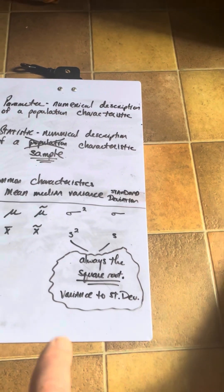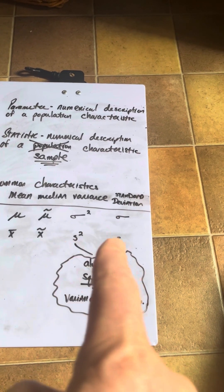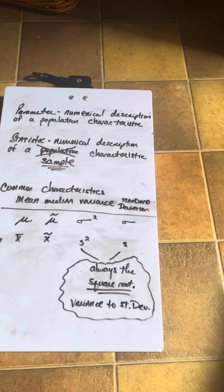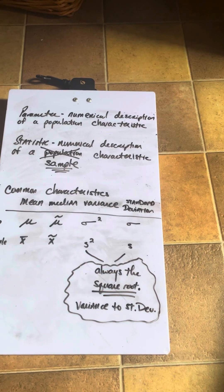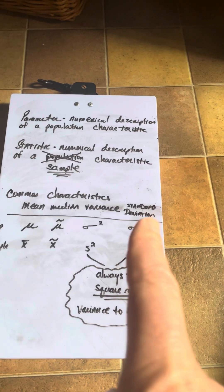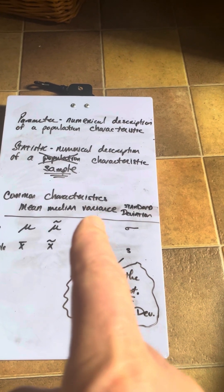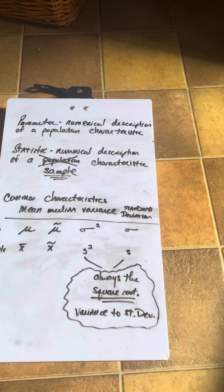And again, you're taking the square root of the variance to get the standard deviation. And so I make this little note. First of all, it's always the square root. To go from variance to standard deviation, you're always taking the square root. But there's another statement I'm going to make, and it's not written down in here.